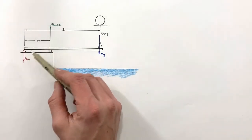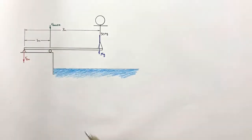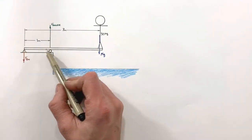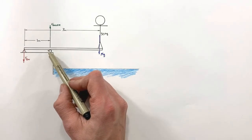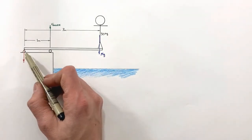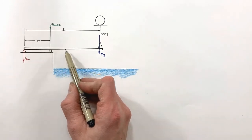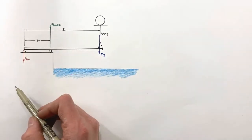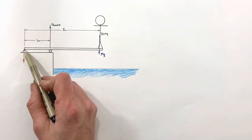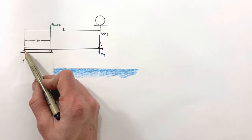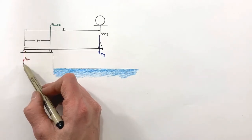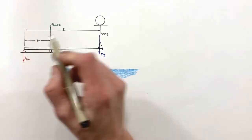Since we have two unknowns, we're going to choose to look at the sum of all torques around one of the two supports. Because the diving board is in static equilibrium, the sum of all torques around any point is zero. We'll start by looking at torques around the pin, which removes the pin force from the equation since it acts at the chosen pivot point.